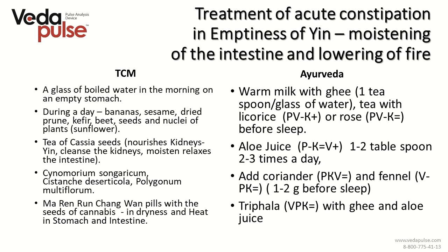There is a TCM drug helpful in acute states: Ma Ren Run Chang pills, with seeds of cannabis — good for dryness and heat in the stomach and intestine. Triphala is not a direct equivalent, as it has its own nuances — it is more effective in treatment of chronic constipation than in treatment of acute constipation. Polygonum Multiflorum is a herb available on the market with an ideal formula for emptiness of yin: Pitta-Vata minus, Kapha plus. It supplies and nourishes Jing and blood, removes toxins and heat, and moistens and relaxes the intestine softly without drying it.